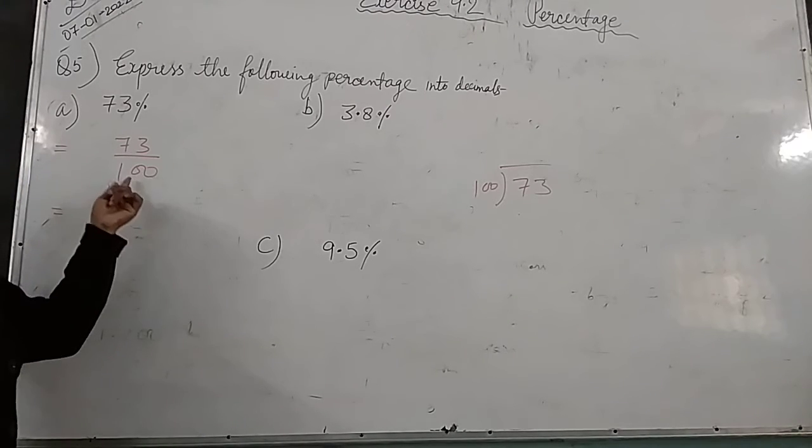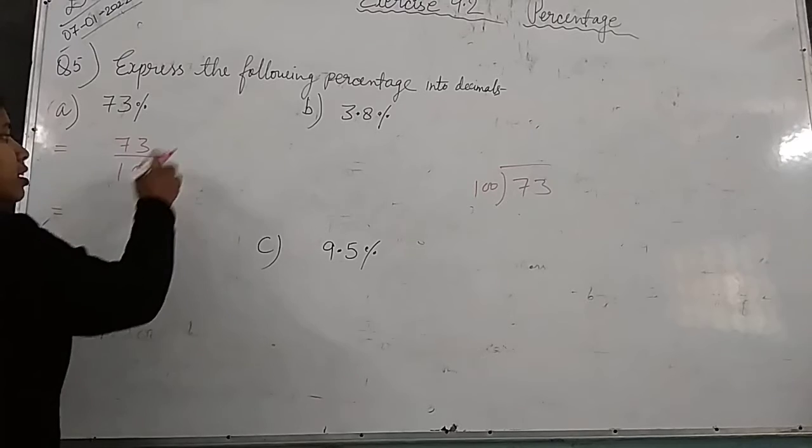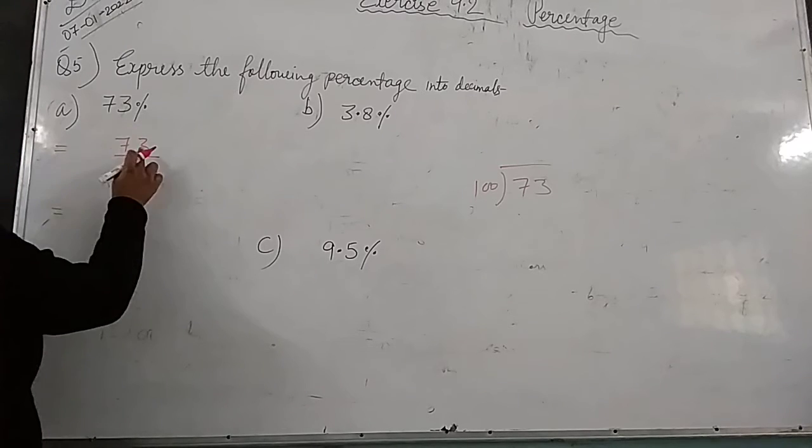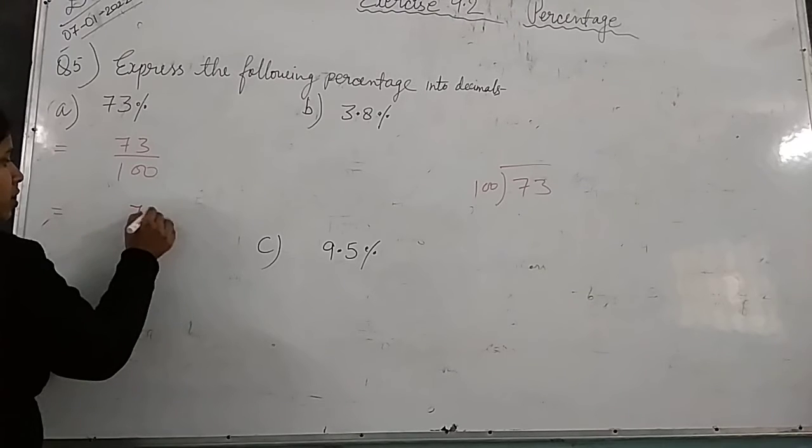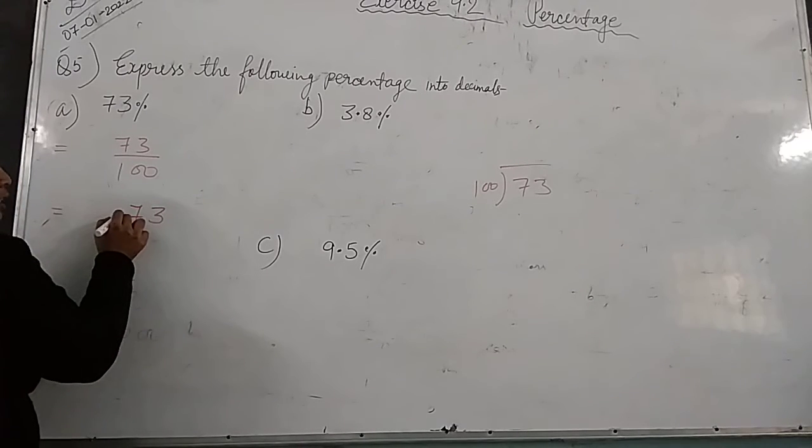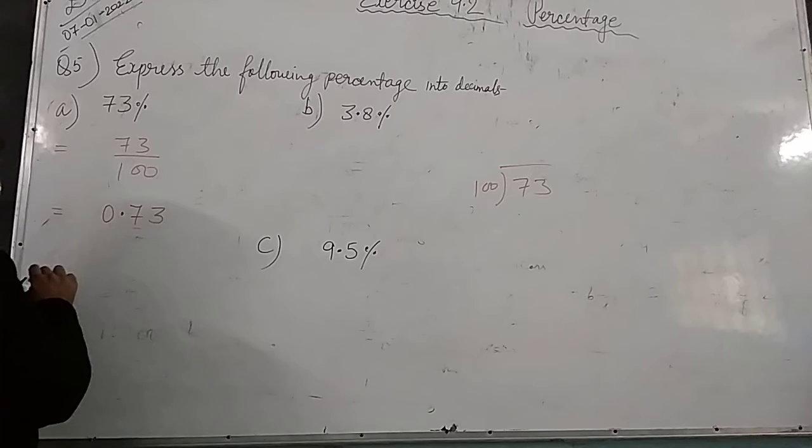We place the point from right hand side, two digits equal. Two zeros here, so from right hand side one, two, we place the point here. And this term means here zero, so this will be your answer: 0.73.